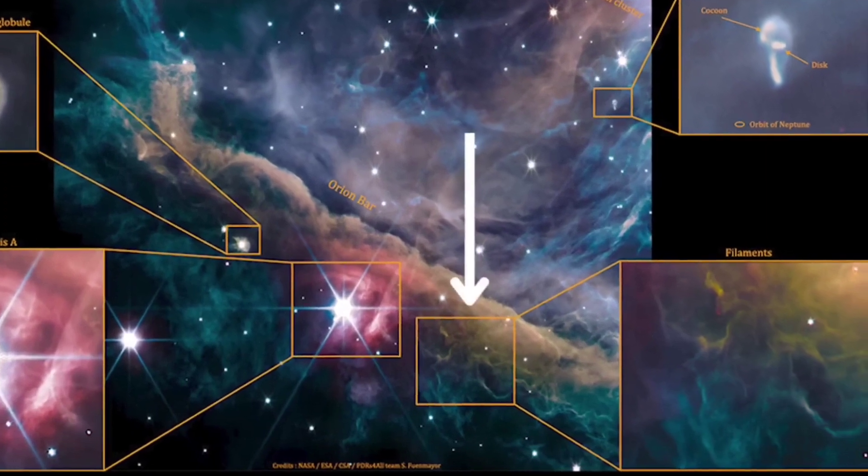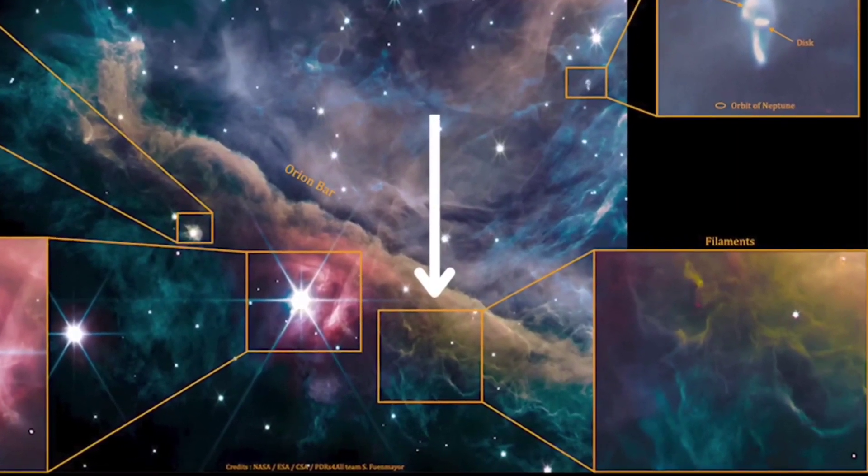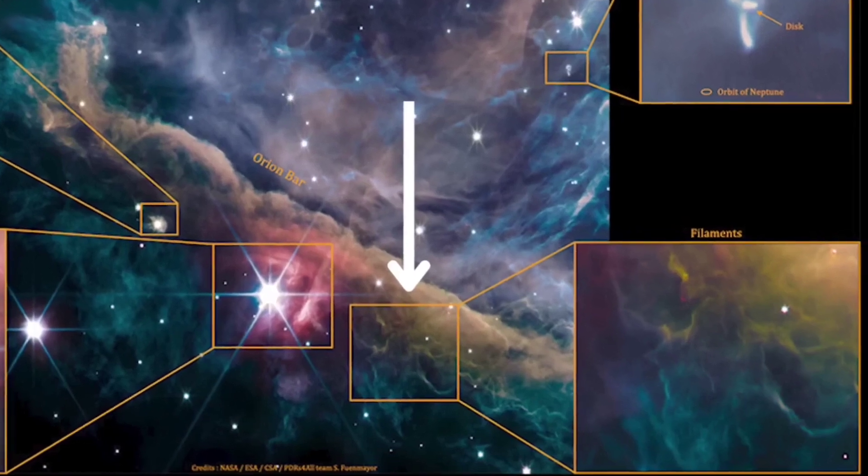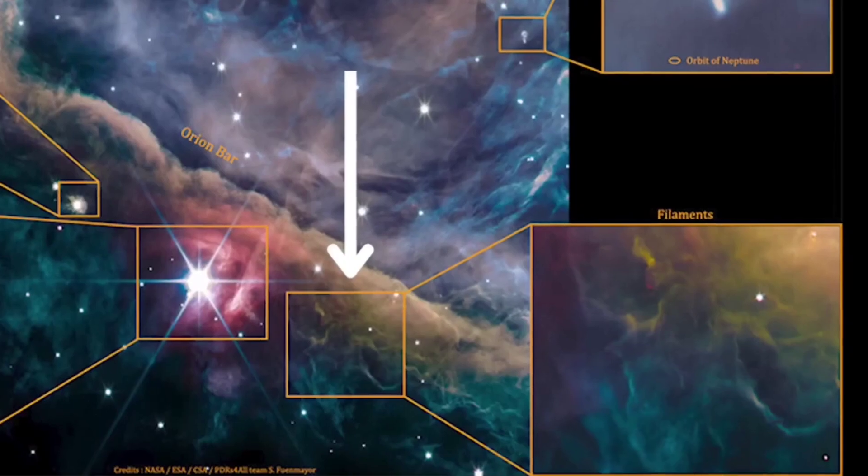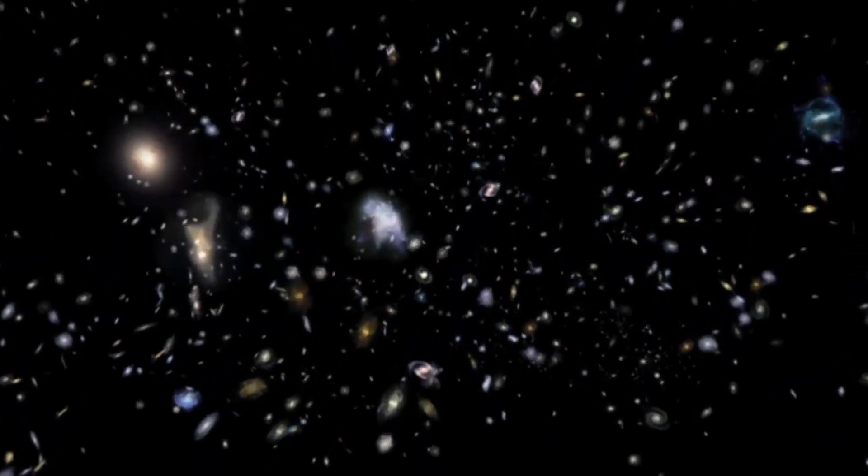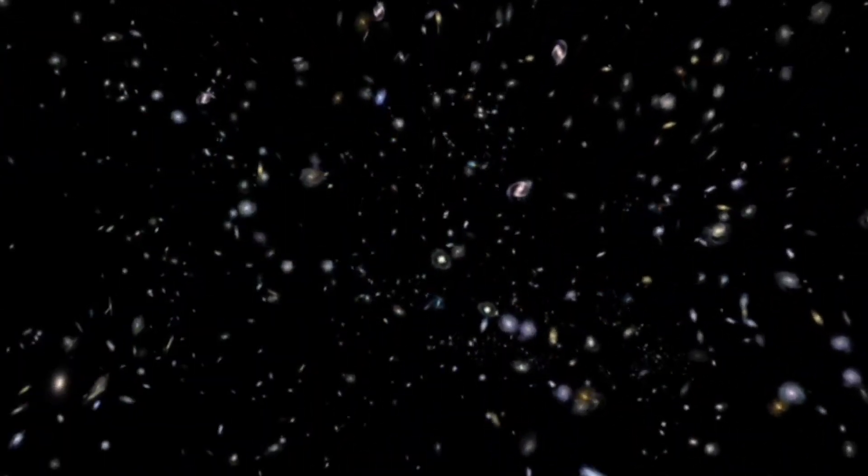Dense filaments can be clearly seen in the Webb image. These filamentary structures may promote a new generation of stars in the deeper regions of the cloud of dust and gas. Besides that, stellar systems already in formation are also part of the image.